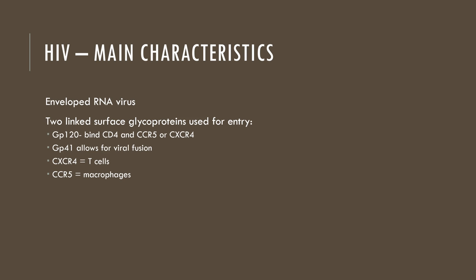HIV is an enveloped virus. HIV-ENV is one of the proteins that can be used as a method of detecting the virus, although the majority of the envelope is acquired from host cell membrane when it leaves infected cells. There are two linked surface glycoproteins the virus uses to enter cells: GP120, which binds to CD4 and either CCR5 or CXCR4 as co-receptors, and GP41, which actually allows for viral fusion. CXCR4 is more often associated with T cell infection, whereas CCR5 is more often associated with macrophage infection.